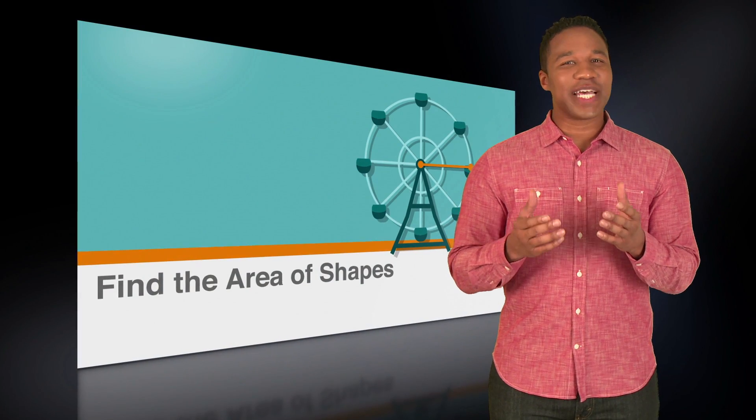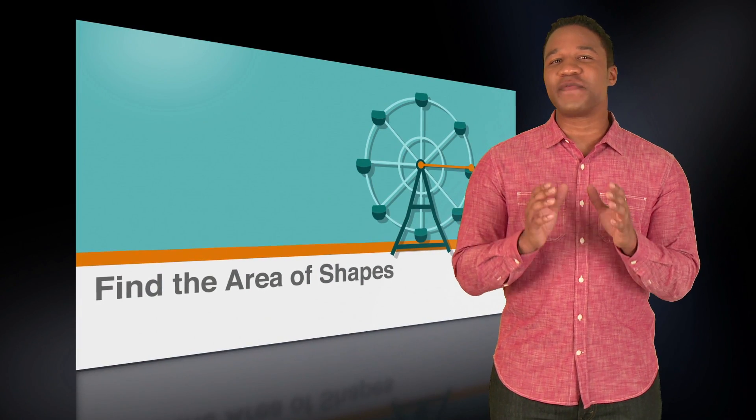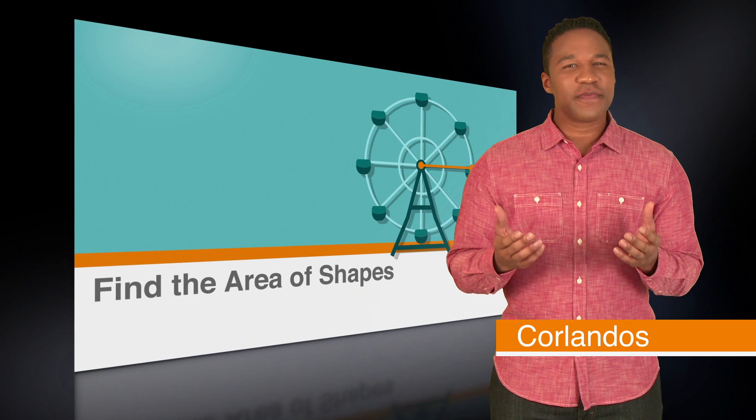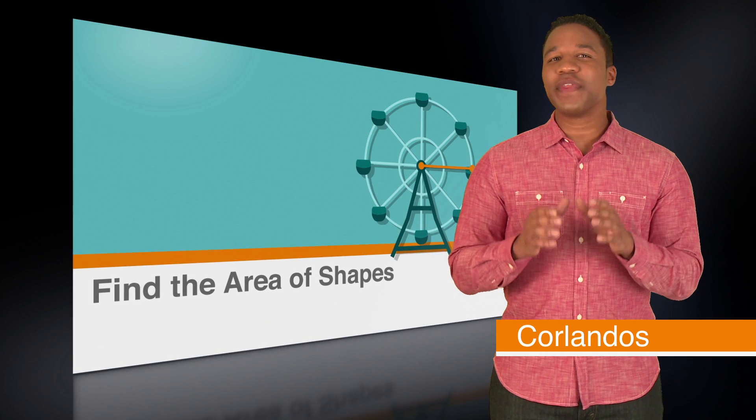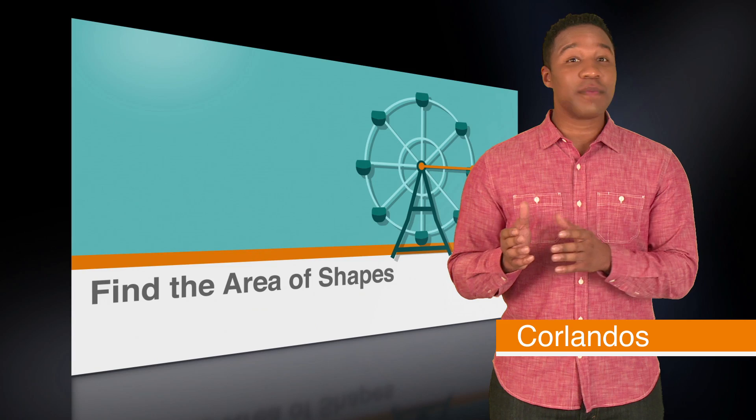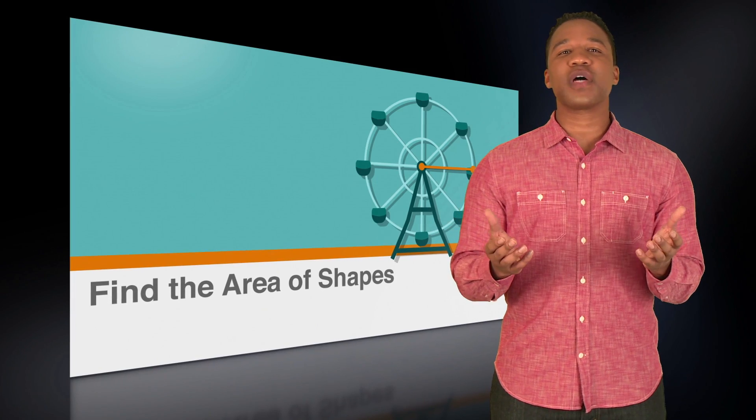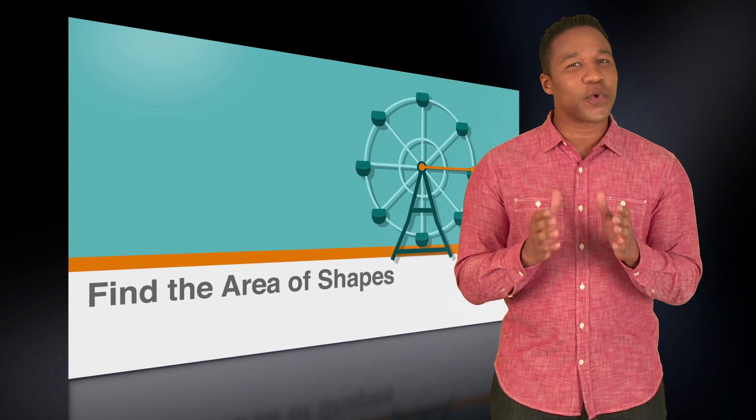One of the things that the ACT will ask you to do is find the area of different shapes. You might see some funky-looking shapes, but if you know the area formulas for parallelograms and trapezoids, you can deconstruct almost anything that contains a four-sided shape.